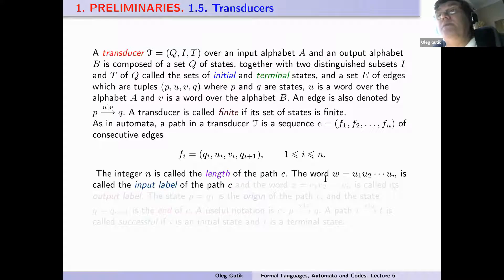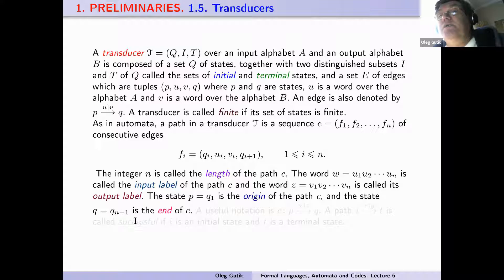The word w, which equals u1·u2·...·un, is called the input label. The word z, which equals v1·v2·...·vn, is called the output label. The state p, which equals q1, is called the origin of the path C. And the state q, which equals qn+1, is called the end of this path C.